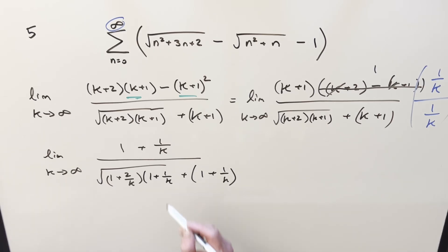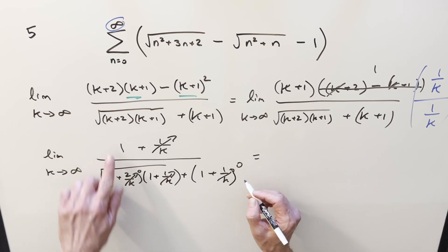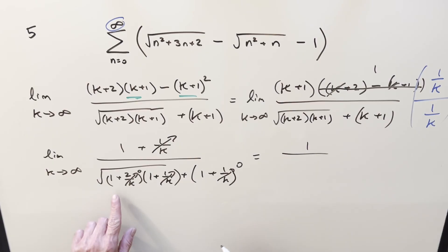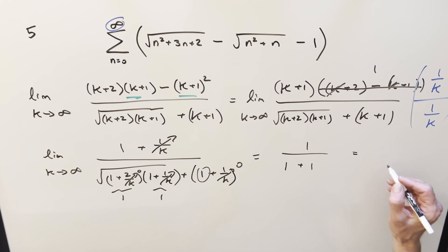But then with k going to infinity, all these terms with k's in the denominator are going to zero. So what we're left with here in the numerator is going to be just a one. This here evaluates to one times one, square root of one times one is one, plus this, we have a one left. So putting it together for my final solution on this, we just get one over two, and that's it.